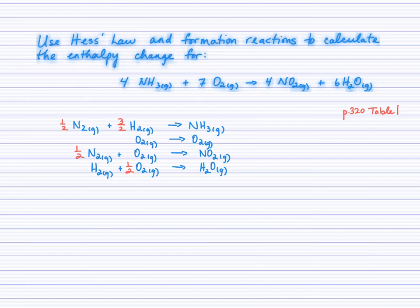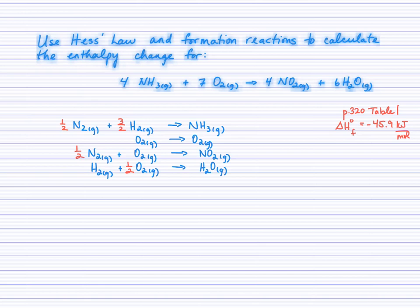Now that we have balanced formation equations written for each of the reactants and products, turn to page 320 table 1 and look up the molar enthalpy of formation for each substance. NH₃ gas has a standard molar enthalpy of formation of negative 45.9 kilojoules per mole. You won't find oxygen gas in table 1 — elements are not listed because forming an element from itself in its standard state involves no energy change, so ΔH° = 0.